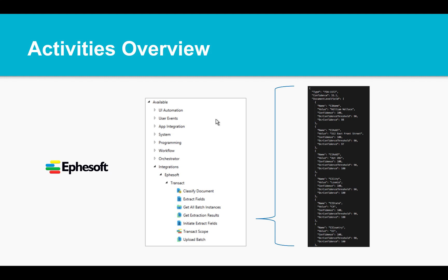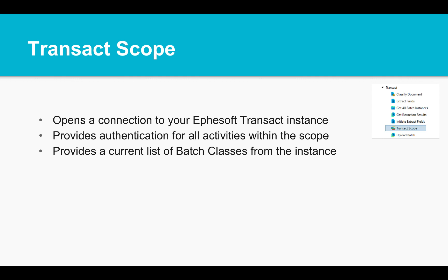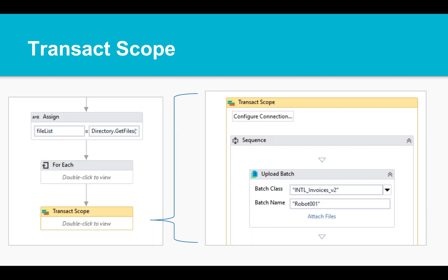Now that we have an understanding of the three methods of use, I'll give you an overview of the UiPath activities that tie into EFASOFT's web services and how they can be utilized. The Transact Scope activity creates a connection to the EFASOFT endpoint and allows a single authentication configuration. It also brings back all the batch classes or document workflows from the server so they're available in your other activity drop-downs. Here's a visual of the scope in a process.